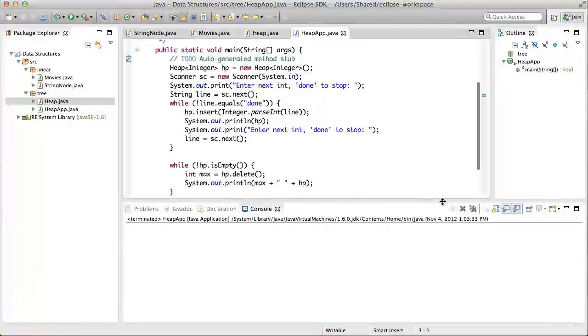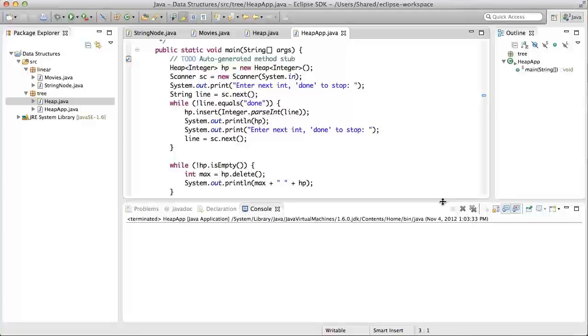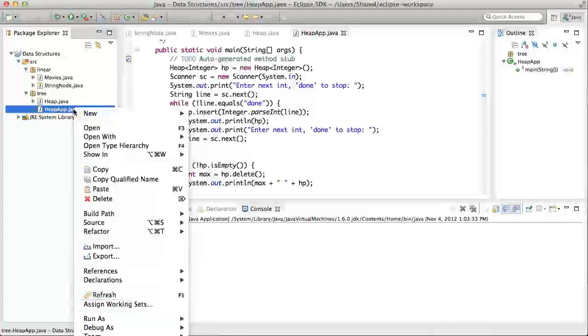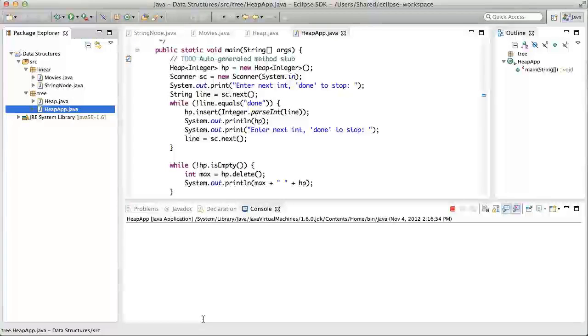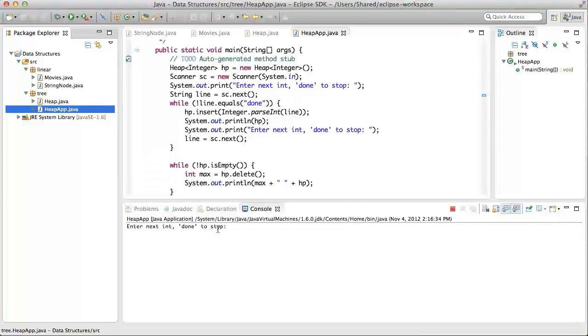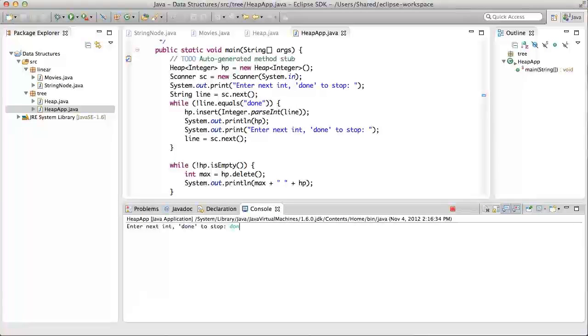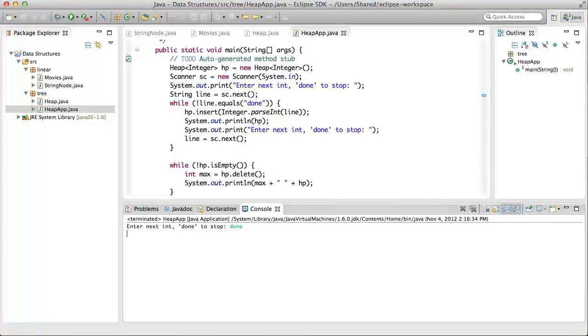First, I want to make sure that it works even if the user does not input any integers. So, let's start it up. And right off the bat, I'm going to type done. There's no output, which is exactly as expected. The first while loop is not entered at all, and neither is the second, and nothing is printed.